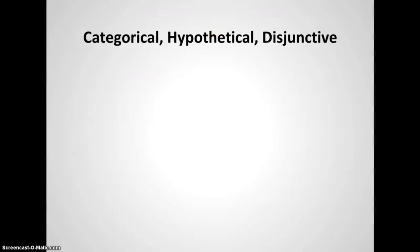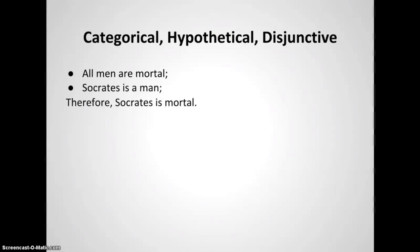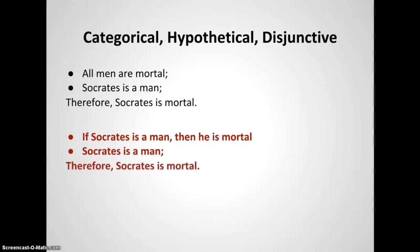Every syllogism has three parts: two premises and a conclusion — premise one, premise two, and the conclusion. A categorical syllogism uses categorical propositions. A hypothetical syllogism also has two premises and a conclusion. Every syllogism asserts that assuming the truth of the premises, the conclusion is necessarily true — it must be true and cannot possibly be false. So if it is true that Socrates is a man, then this conclusion absolutely must follow.